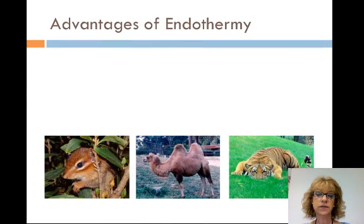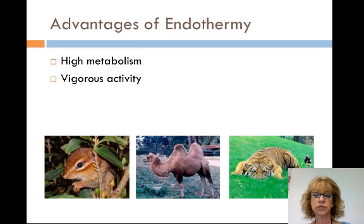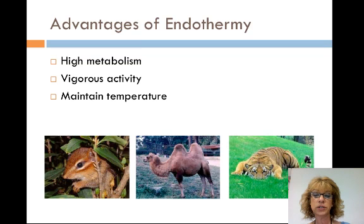Some advantages of endothermy include very high levels of aerobic metabolism, assisted by elaborate circulatory and respiratory systems, enabling vigorous activity for extended periods of time — for example, long-distance running or powered flight. Terrestrial endotherms can maintain stable body temperatures during environmental temperature fluctuations more severe than the aquatic environment; for example, endotherms can function at freezing temperatures. Ectotherms cannot.